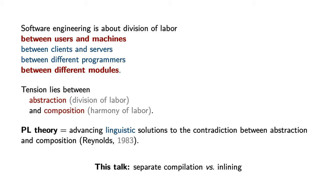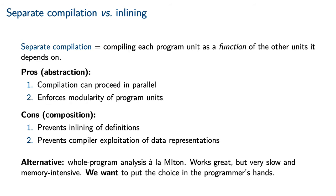In this talk, we will focus on one particular example of this contradiction: the tension between separate compilation and inlining. Separate compilation is a simple idea, which is to compile each program unit as a function of the other units that it depends on. Compilation is easily parallelizable — even if one unit depends on another, they can both be compiled at the same time. Separate compilation is also attractive from an aesthetic point of view, because it enforces the modularity of program units. In principle, even a compiled unit could have its dependencies replaced without changing the overall behavior of the program.